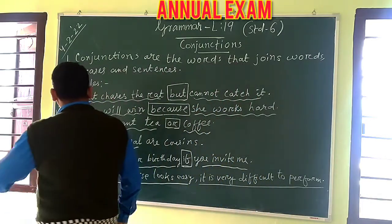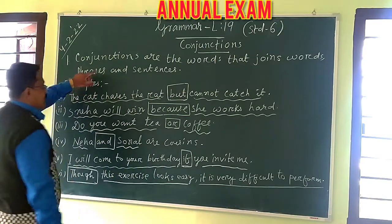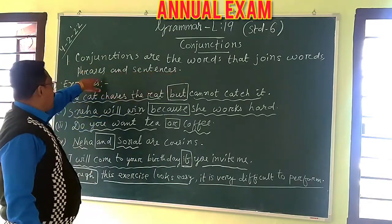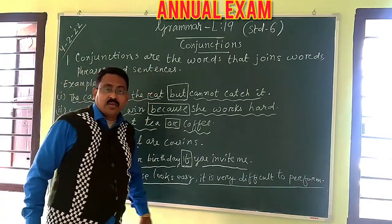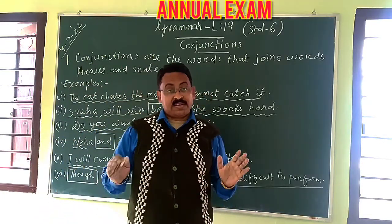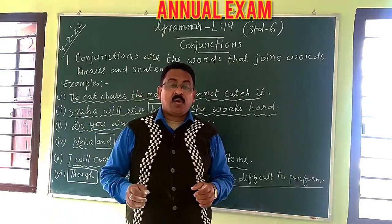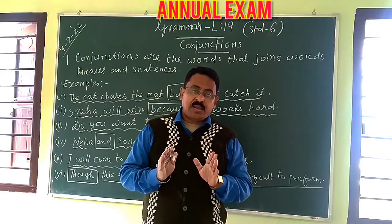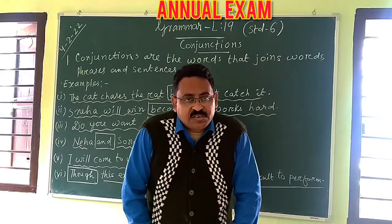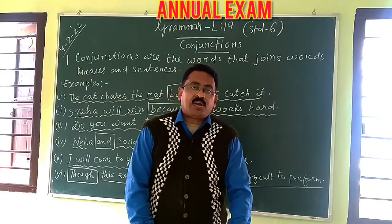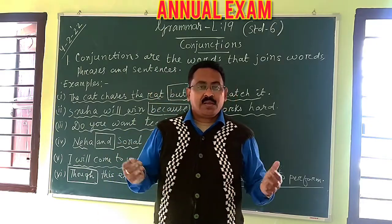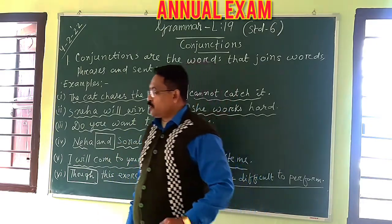First of all, what is a conjunction? Conjunctions are words that join words, phrases, or sentences. When two words, two phrases, or two sentences join with the help of a particular word, that word is called a conjunction. Conjunction is also called a joining word because it helps you join sentences.